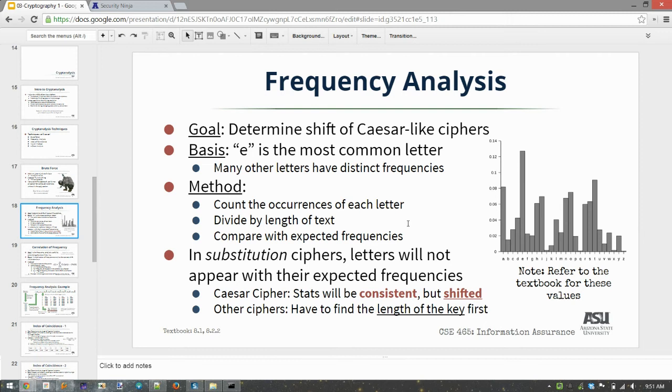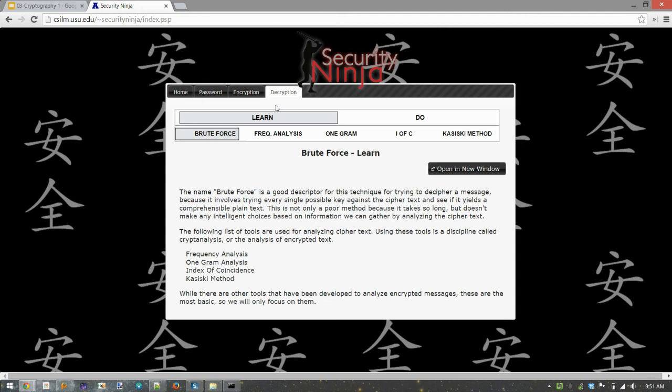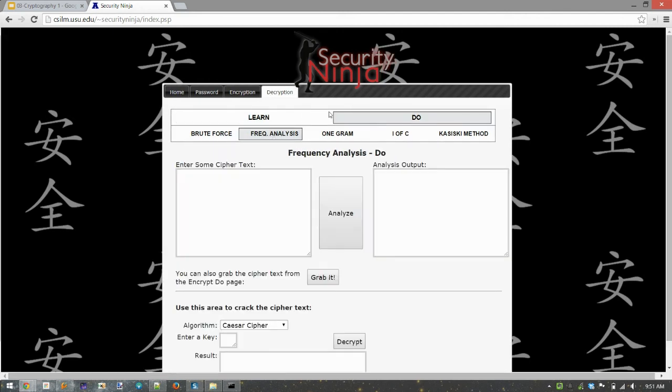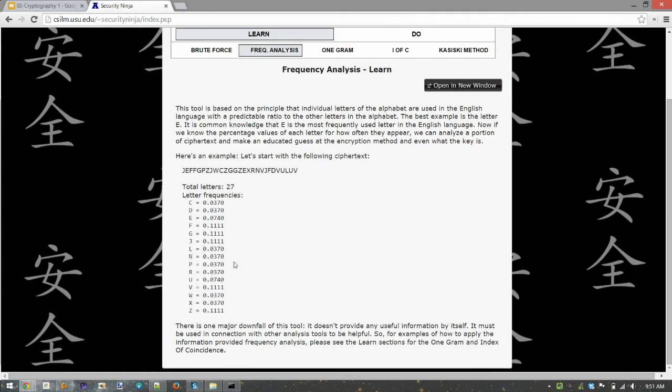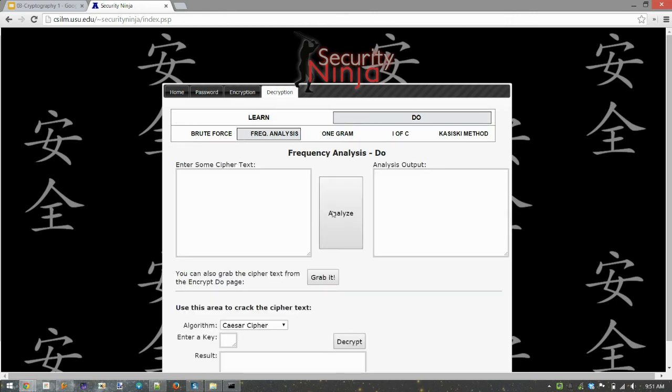Okay, so if we have a shift of S, then all of these values should be about the same, but just in a different place, right? That's what we talked about in lecture, that the statistics will be consistent, but shifted. They'll be in a different place. Well, let's go ahead and run the frequency analysis. So we have a tool here. We just come to decryption, frequency analysis, and then the do. And if you're interested in a different explanation, the learn side of any of these will give you information. But for right now, we're just going to use the do. And I've got this cool feature that we can just grab the cipher text from the other page, and it goes right there. So let's analyze it.